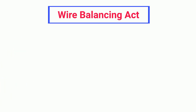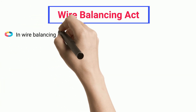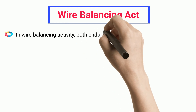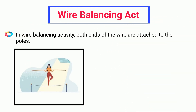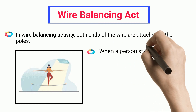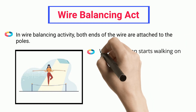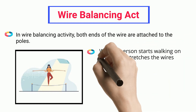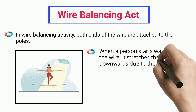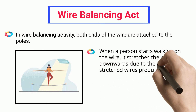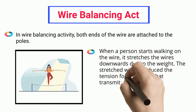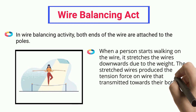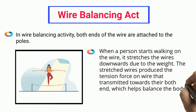Wire Balancing Act. In a wire balancing activity, both ends of the wire are attached to poles. When a person starts walking on the wire, it stretches the wire downwards due to their weight. The stretched wire produces tension force that is transmitted towards both ends, which helps balance the body on the thin wire.